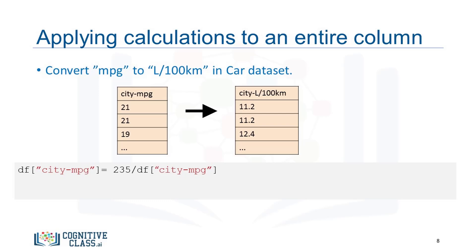To transform miles per gallon to liters per hundred kilometers, we need to divide 235 by each value in the city miles per gallon column. In Python, this can easily be done in one line of code. You take the column and set it equal to 235 divided by the entire column. In the second line of code, rename the column name from city miles per gallon to city liters per hundred kilometers using the data frame rename method.